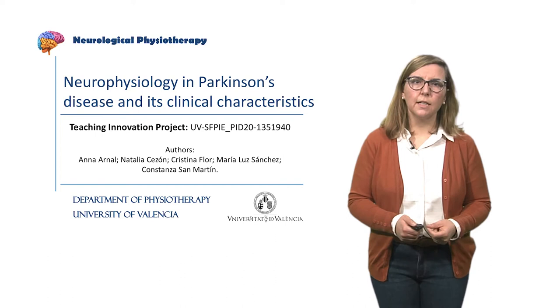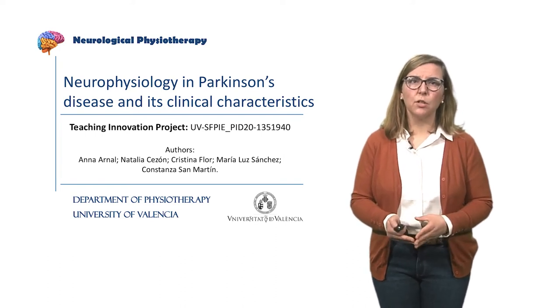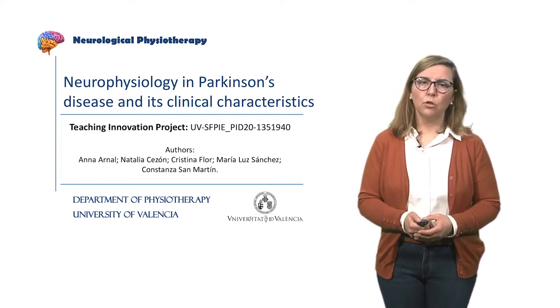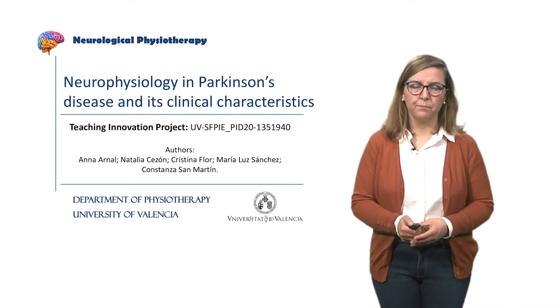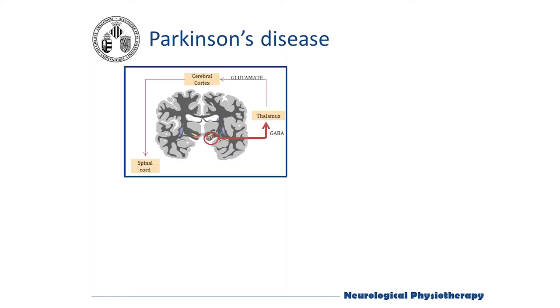In this video we will discuss the neurophysiological basis of Parkinson's disease in order to have a better understanding of its clinical characteristics. If Parkinson's disease has an idiopathic origin, it is characterized by being neurodegenerative — that is, there is cell death that affects dopaminergic neurons, named after the neurotransmitter which they secrete: dopamine.